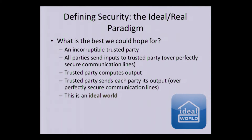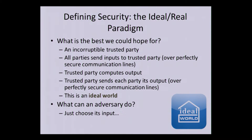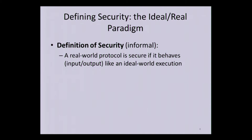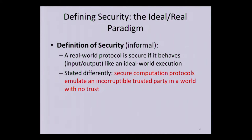The problem is this is an ideal world — we don't really have such a trusted party — but this is essentially what we want to emulate. In this ideal world, the adversary really can't do anything but choose its input, so there's nothing you can do to attack the protocol. In order to define security, we compare between an execution of a real protocol and this ideal world, and we say, very informally, that a real world protocol is secure if it behaves essentially like this ideal execution. Stated differently, secure computation protocols emulate an incorruptible trusted party in a world without any trust.